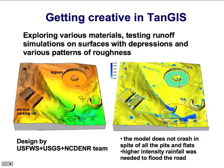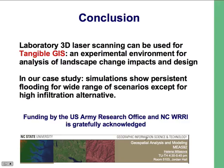You can see how persistent water flow is and how important infiltration is — once water starts flowing, it's very hard to control it. We can use the laboratory 3D laser scanning as a tangible GIS, as an experimental environment for analyzing landscape change impacts and to design landscape change in such a way that it minimizes environmental impacts.